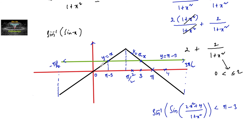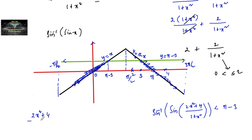The graph satisfying the condition corresponds to either this part or that part. Since the expression lies between 2 and 4, the possible values are above 2 and below 4. From 2 to 3 the graph is above π−3, and from 3 onwards it is below π−3. So we need (2x²+4)/(1+x²) to be greater than 3.